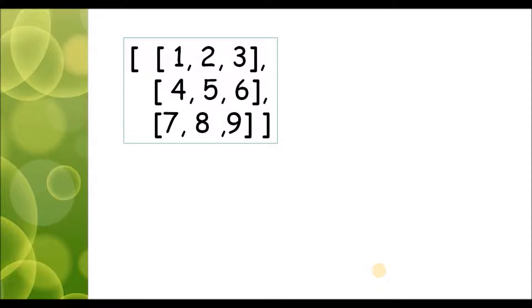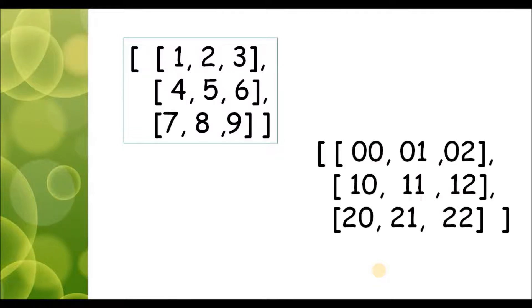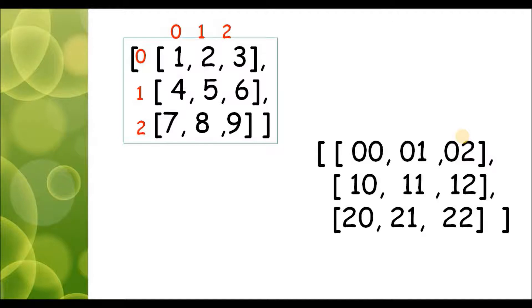Suppose we have a typical square matrix of 3 by 3, where 3 is the number of rows and columns. In a square matrix we have an equal number of rows and columns. I am going to write the index position of each and every element — the row number of this matrix is 0, 1, and 2, and the column number will also be 0, 1, and 2.